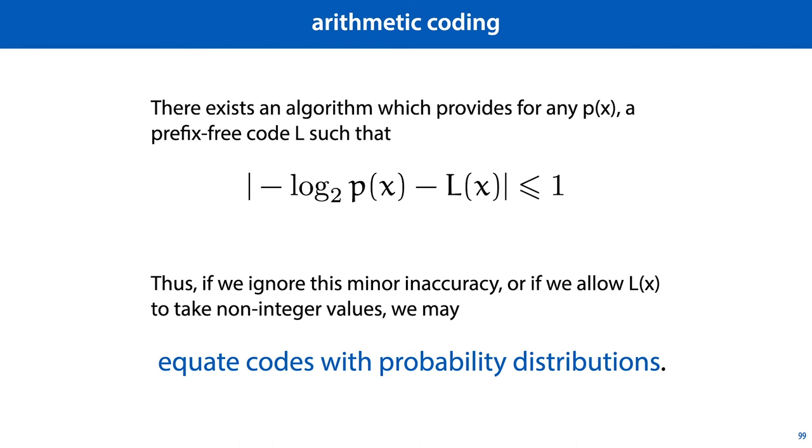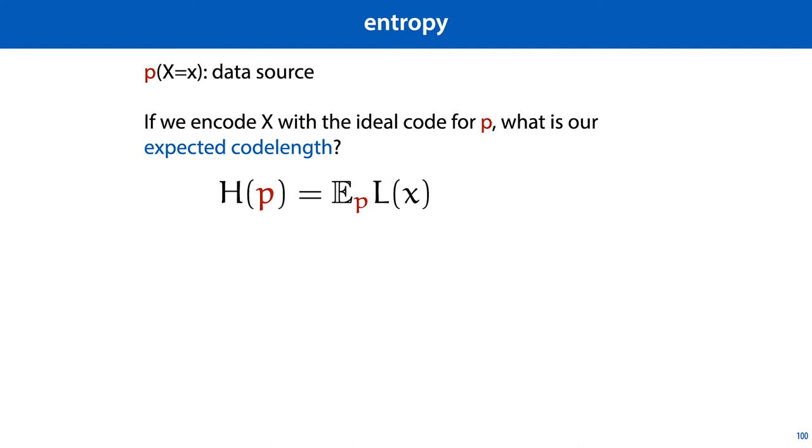And with this, we can define the concept of information entropy. The entropy of a distribution is the expected code length of an element sampled from that distribution, if we encode with a tree corresponding to the distribution. So we encode with the ideal code for p, what then is our expected code length. This function we will call h of p, so this is a function of a probability distribution. And to work out the expected code length, we can simply fill in the definition of the expectation. The sum over all the code lengths, weighted by the probability of the outcome. And if we then fill in the definition of the code length, we get this formula. This is the formula for the information entropy of a probability distribution. And the logarithm in this case is the binary logarithm.